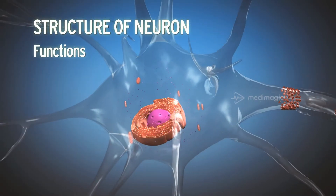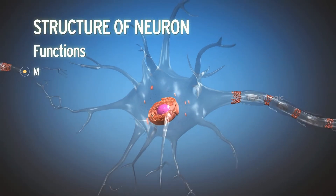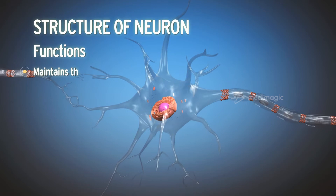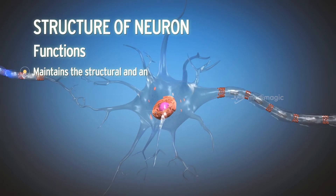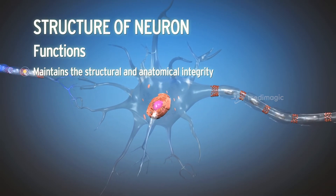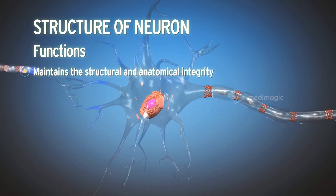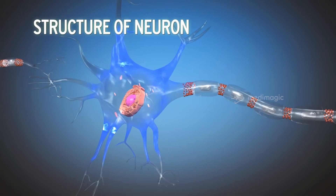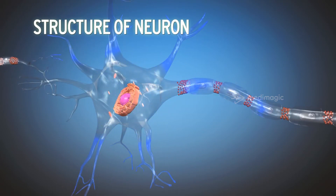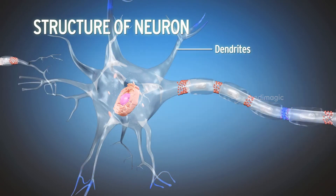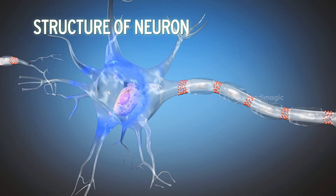The nerve cell body maintains the structural and anatomical integrity of the axon. Dendrites are the processes which extend out of the cell body and produce numerous branching; these act to conduct electrical stimulation.